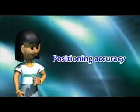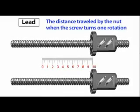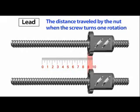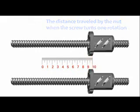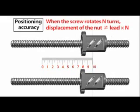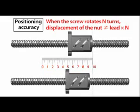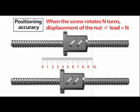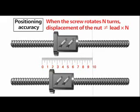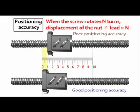Positioning accuracy. Lead is the distance traveled by the nut when the screw turns one rotation. Loss of positioning accuracy may be caused by small differences in the lead due to manufacturing error. When the screw rotates 10 times, the displacement of the nut will not actually be exactly equivalent to 10 times the lead.